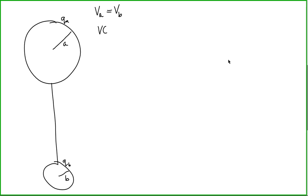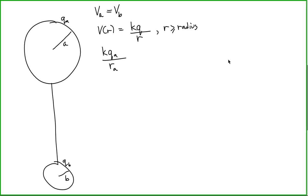We have shown previously that the electric potential from the center of a conducting sphere is equal to the Coulomb constant times the charge on the sphere divided by the distance from the center of the sphere, for values of R greater than or equal to the radius of the sphere. So the electric potential on sphere A is given by KQA over the radius of sphere A, and the electric potential on sphere B is equal to KQB over the radius of sphere B.